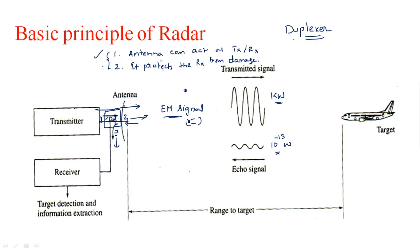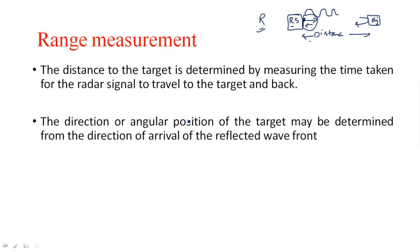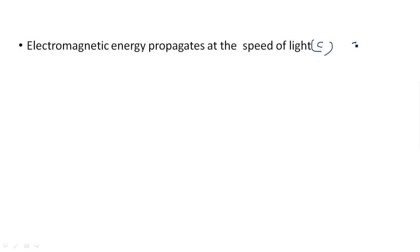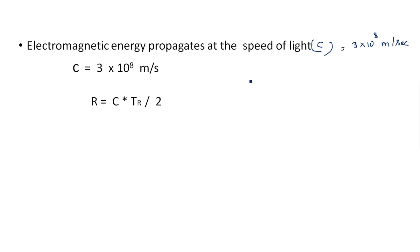The velocity of light is 3×10⁸ m/s, which is the same velocity C of the EM signal. The direction or angular position of the target may also be determined from the direction of arrival of the reflected wavefront. Using the basic standard formula — distance equals velocity multiplied by time — we can calculate the range.